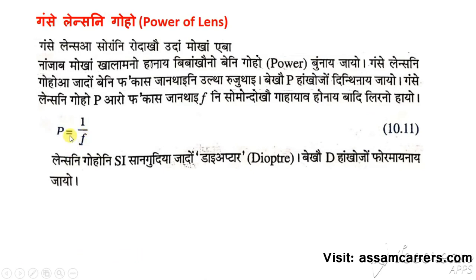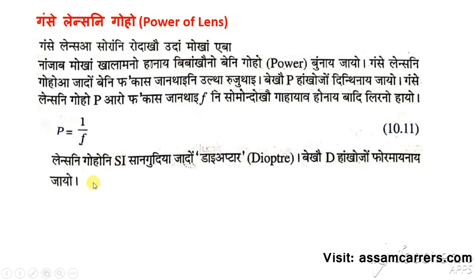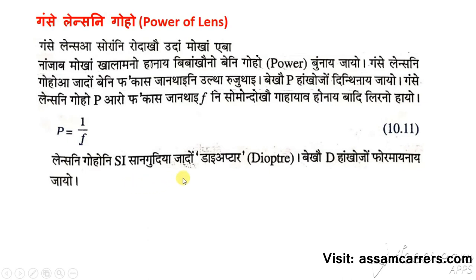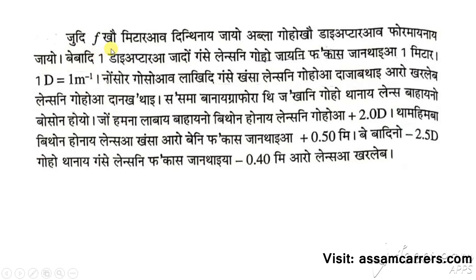The formula is equal to 1 by f. This is P-unit and it will be diopter. This is the diopter. The diopter is the unit. The 2D lens is the same as the power of the lens. The power of the lens is the same as 2.0G and 1.5G. There is no distance between the two.